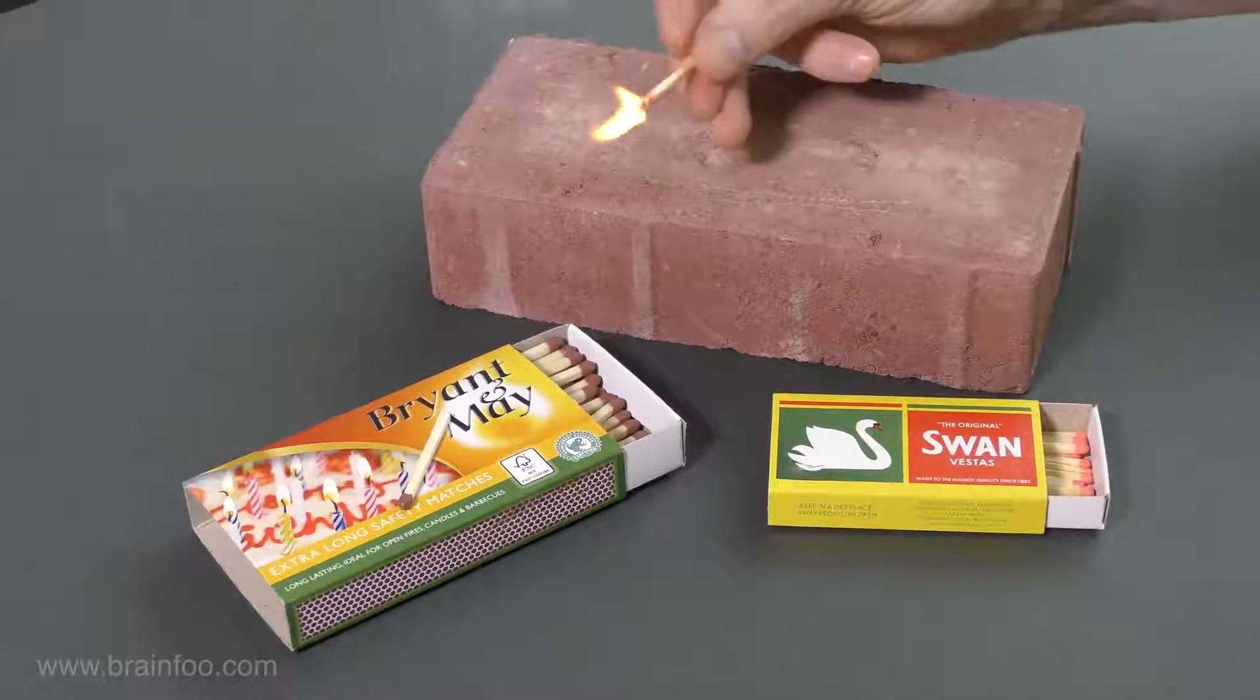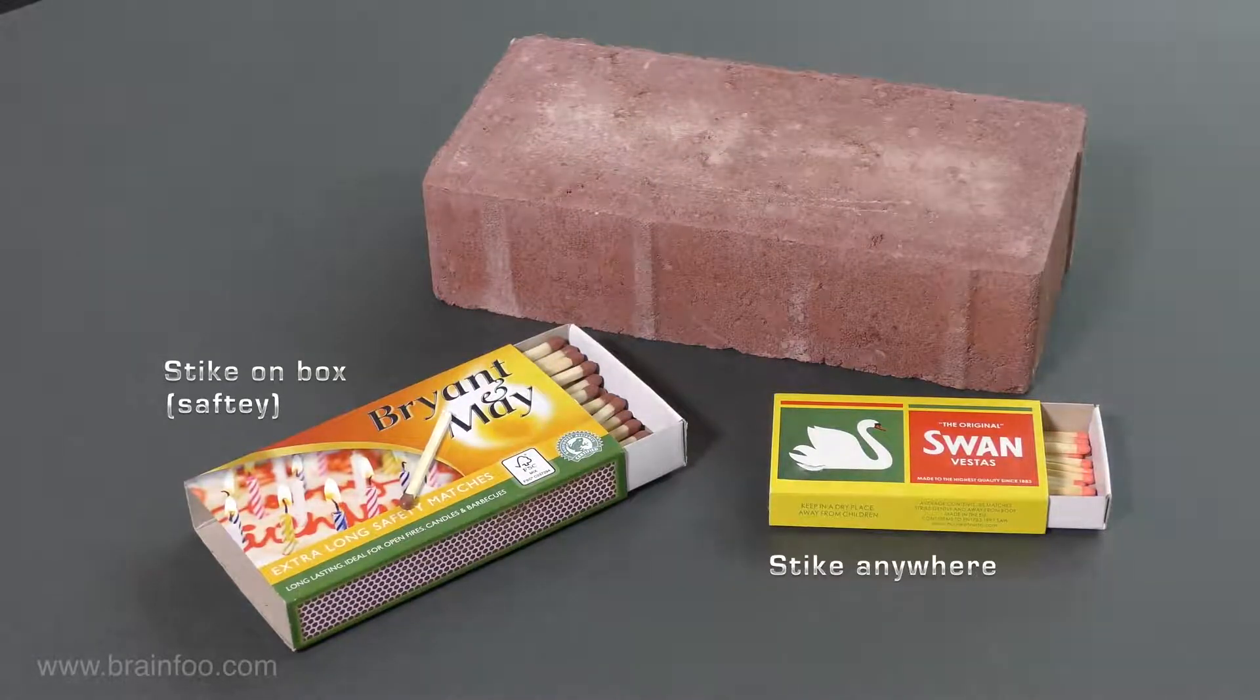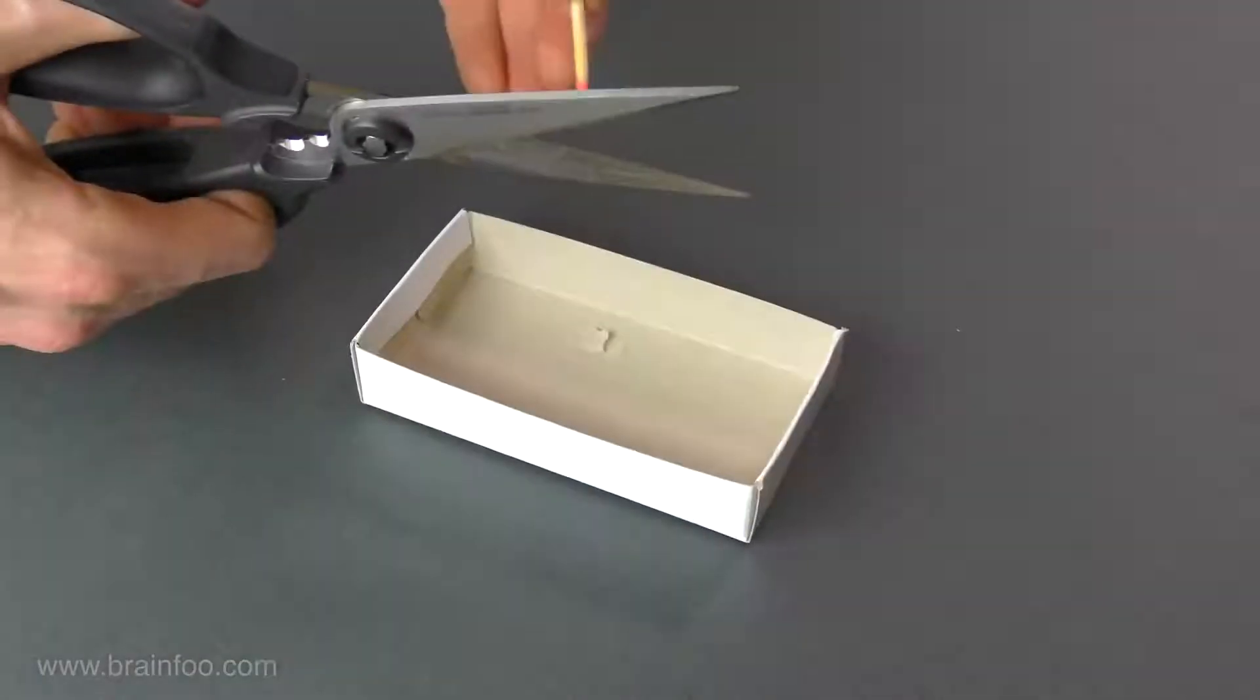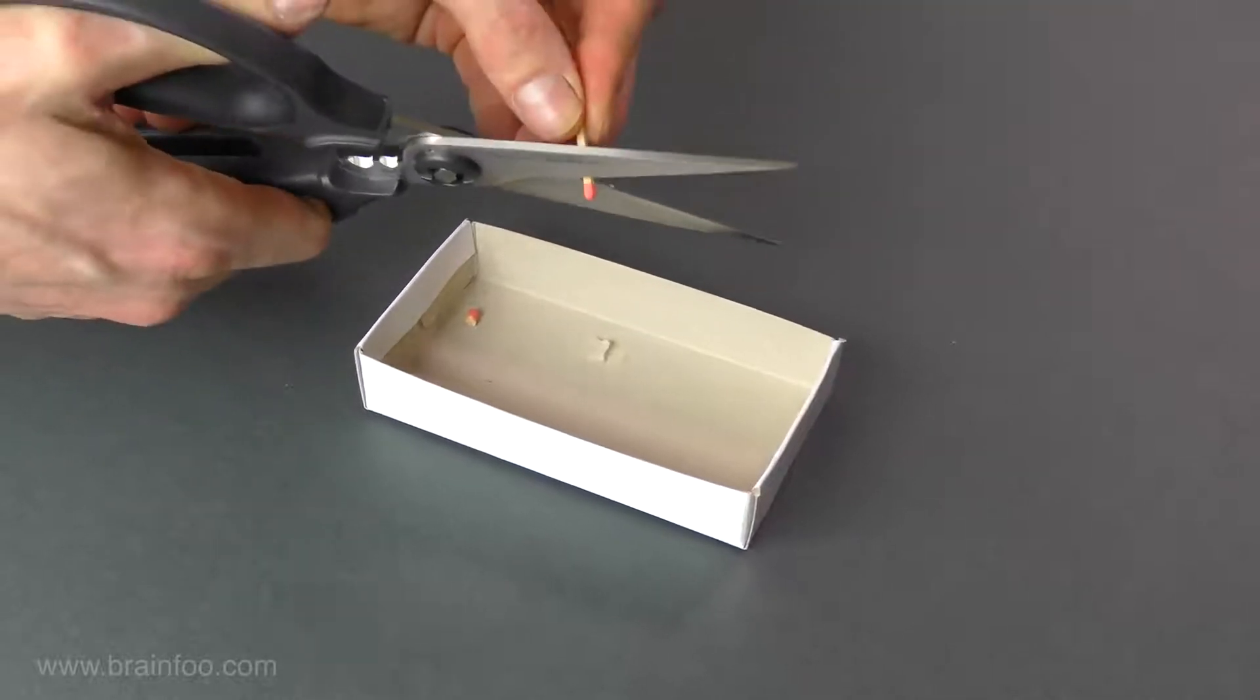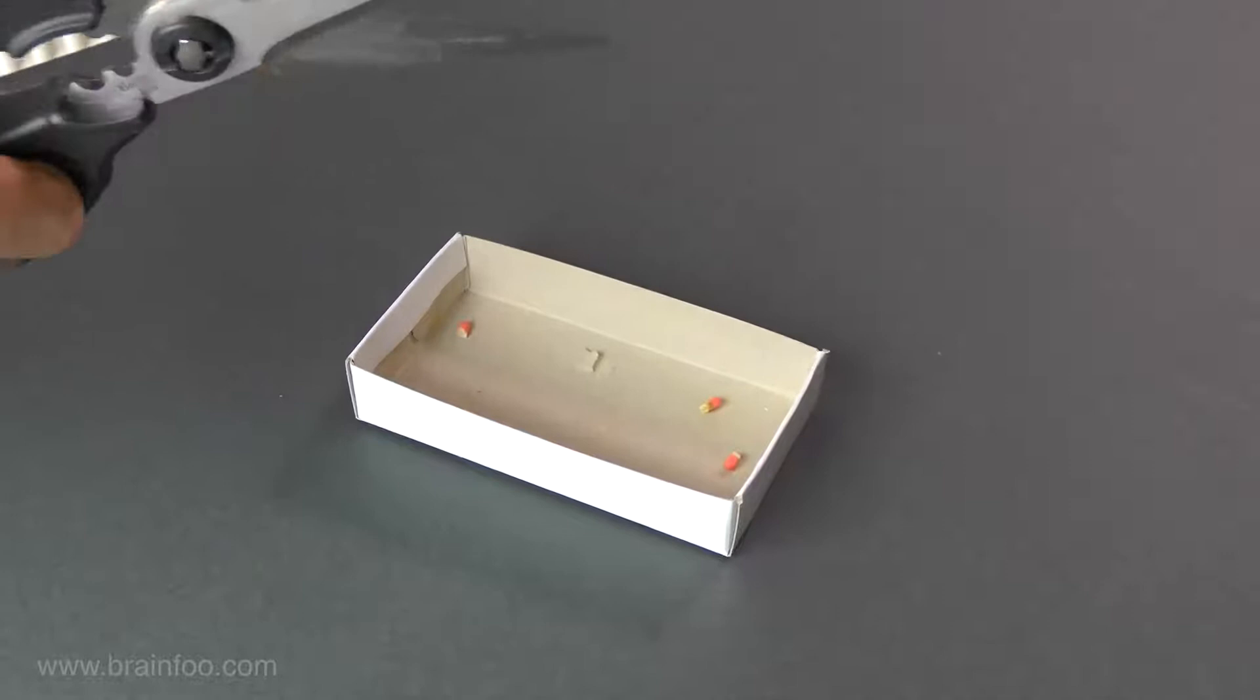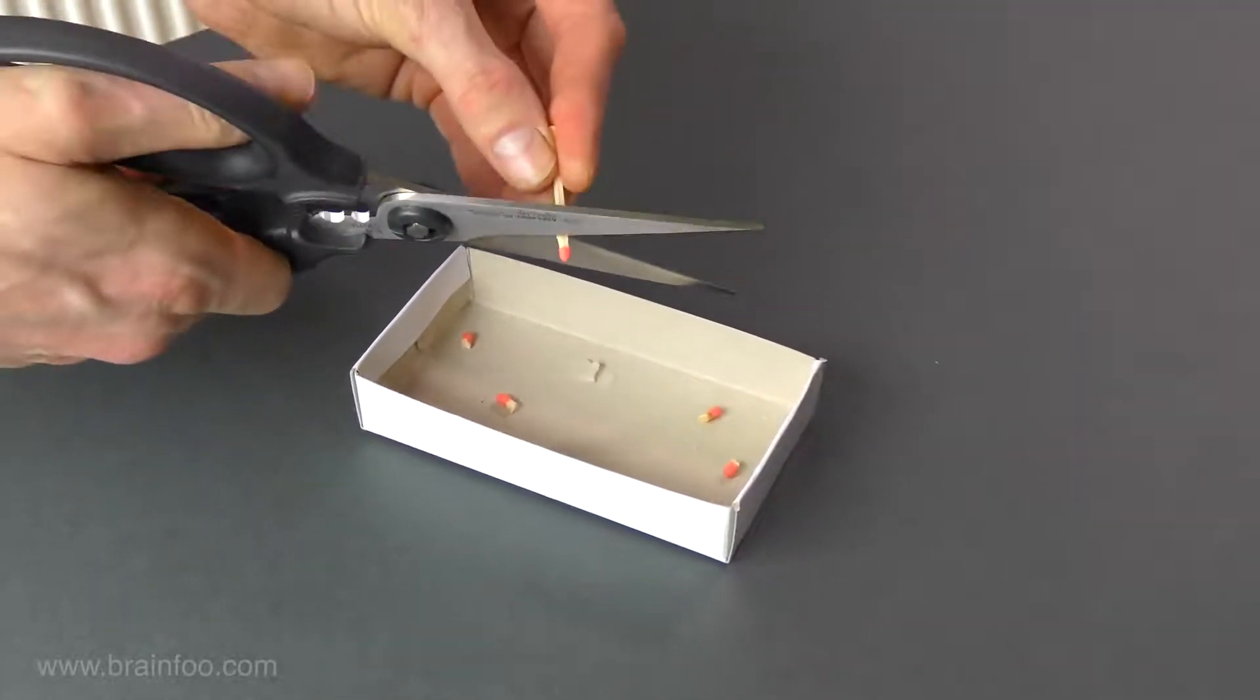Pretty much any type of match will do, but I had the most consistent results and longest range with the Strike Anywhere matches as against the Strike On Box only variety. The first thing we need to do is harvest some match heads for our rocket engine. That's done by simply cutting away the unwanted wooden part of the match, close enough to the tip so that we're not carrying unnecessary weight but not so close that the match head breaks up.